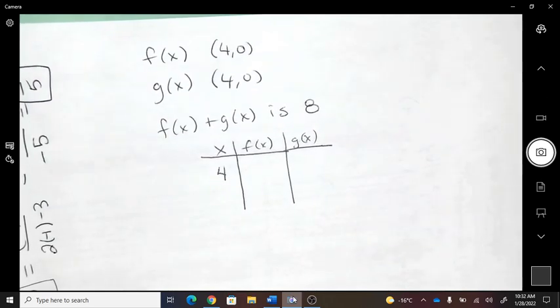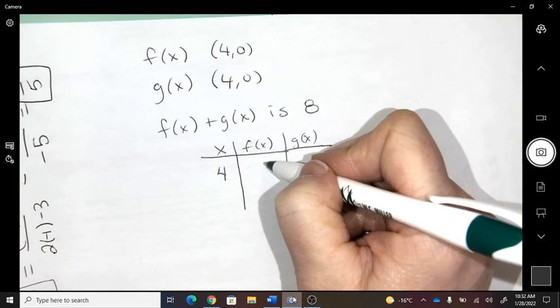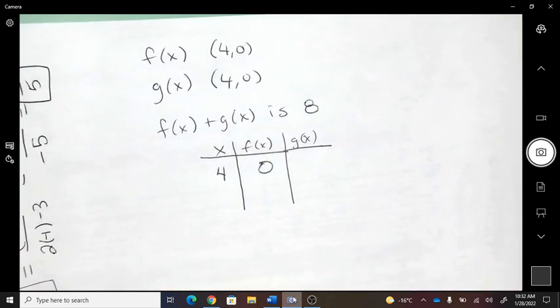If x is 4, then the f of x was 0, right? Because that's what an x-intercept is.